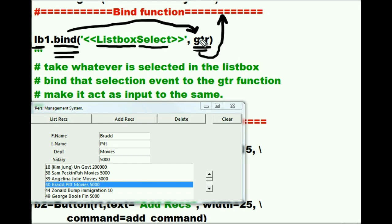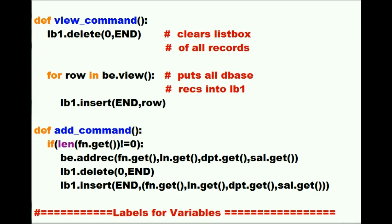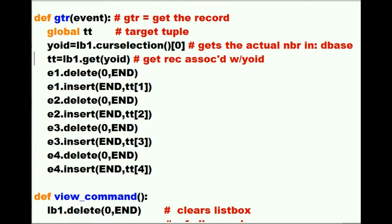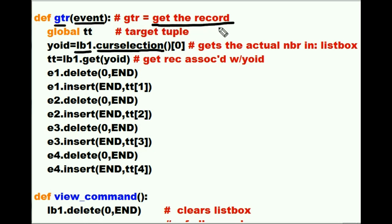Let's go take a look at this function and see what it does. Here are our add and view commands — there we go — GTR. So the system rushes up here to the GTR function and it hands it the event. GTR now knows about that record; it has gotten that record. I next declare a variable called TT — that's the target tuple that I just selected.